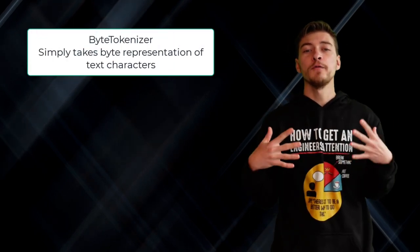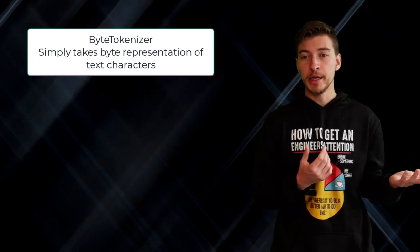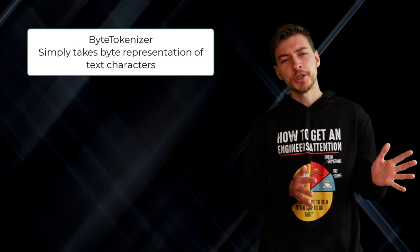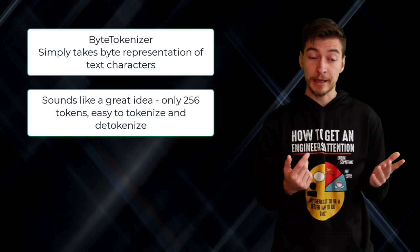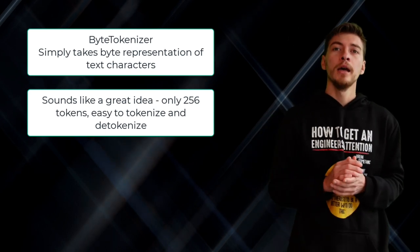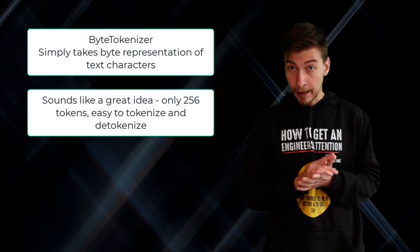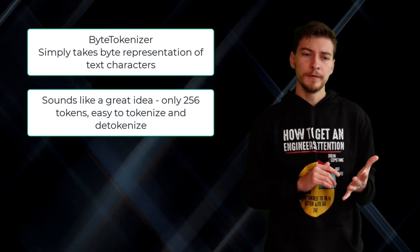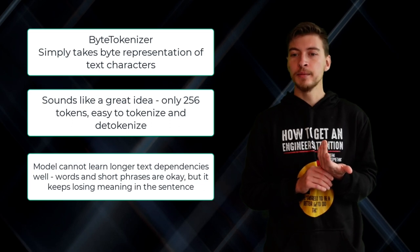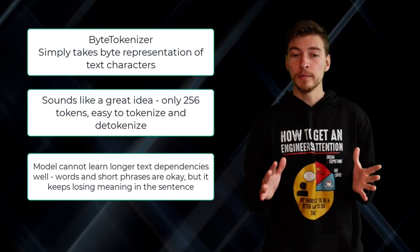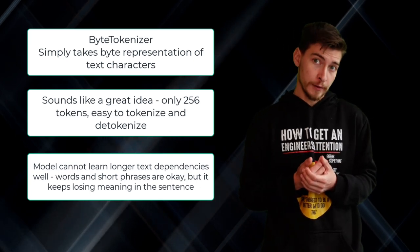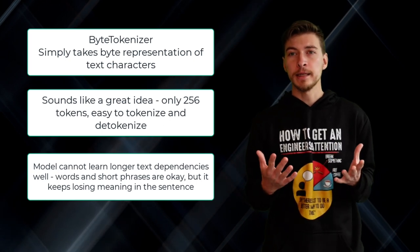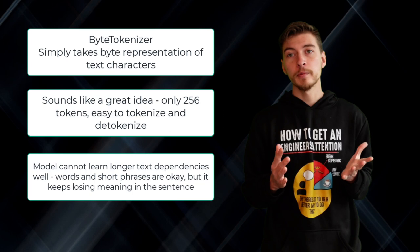For the choice of tokenizer, byte tokenizer, which basically transforms the characters into their byte representation, is a very lucrative option here. It makes encoding and decoding on a device a piece of cake, and also leads to very small vocabulary - 256 is enough to cover everything. However, the unmodified and even slightly larger model was not able to learn long-term dependencies in the corpus. In other words, it would learn the words and some shorter phrases, but would fail to make coherent sentences much more often than the wordpiece tokenizer.